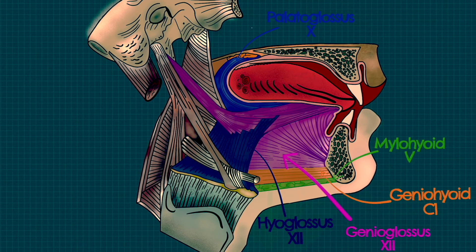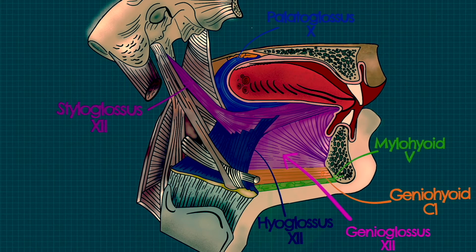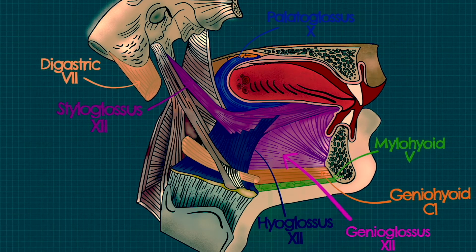The muscle coloured purple is the styloglossus, and this is innervated by the hypoglossal nerve. Next, we have the digastric muscle, which you can see here coloured peach. For the innervation of this, we split the digastric into the posterior belly, which is the muscle posterior to the tendon.